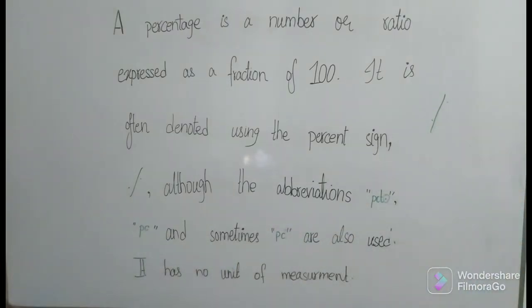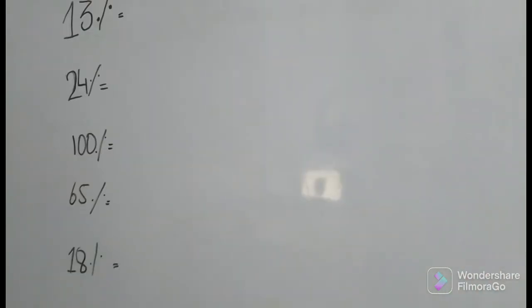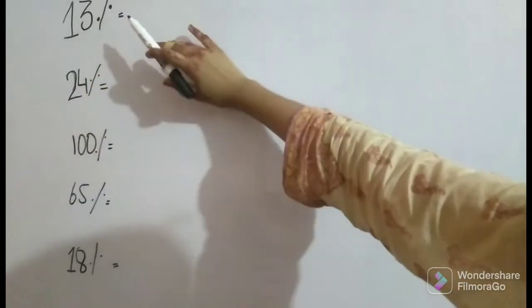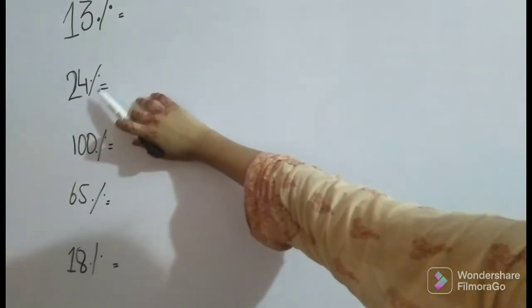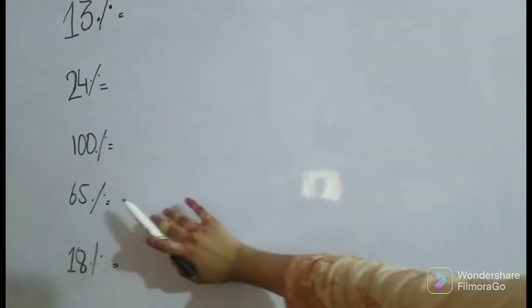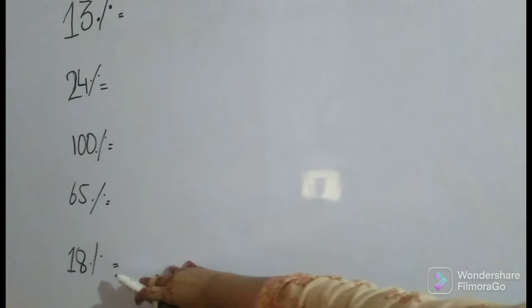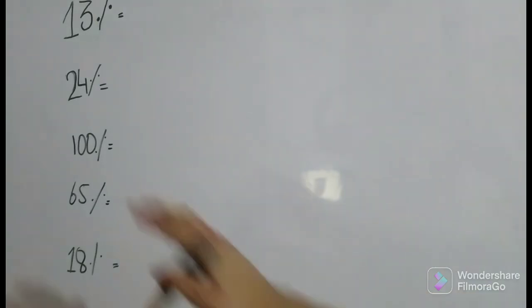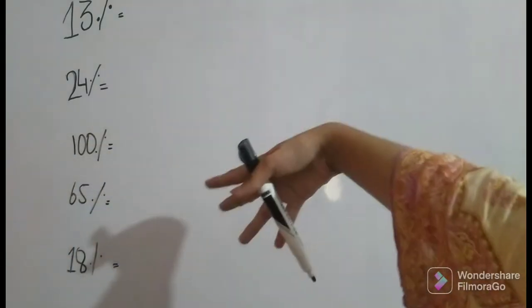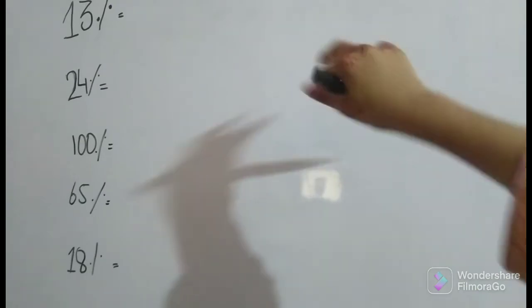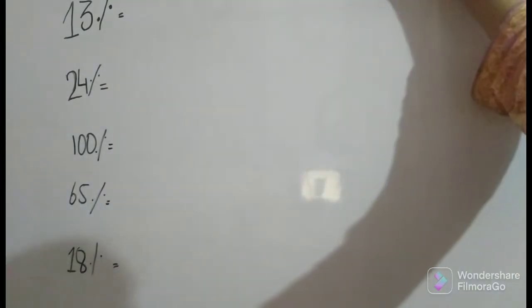So let's solve some questions. Here there are some values: 13%, 24%, 100%, 65%, and 18%. Now how can we change these all percentages into fraction form? Remember that this percentage sign is equal to 1 over 100.